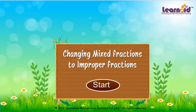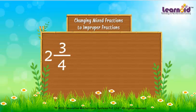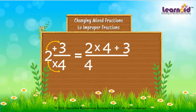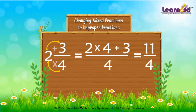Changing Mixed Fraction to Improper Fraction. We have to change 2 and 3 by 4 to an Improper Fraction. We will multiply 4 and 2 and then add the product to 3. The 4 will remain in the denominator. 4 into 2 plus 3 by 4 gives 11 by 4.